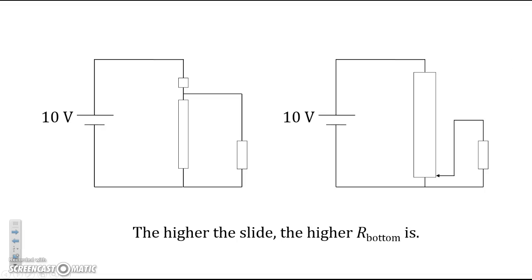And what happens if you move the slide all the way to the bottom? Now, our bottom is basically zero, and so it doesn't contribute at all to the total resistance. Therefore, the bottom potential difference is essentially zero. The higher the slide, the higher the potential difference across the bottom resistor.